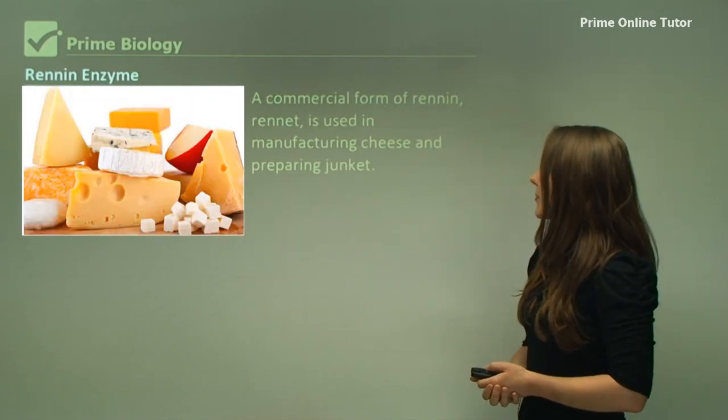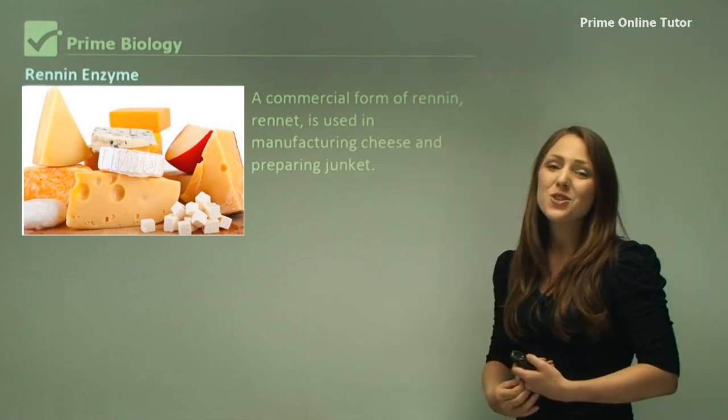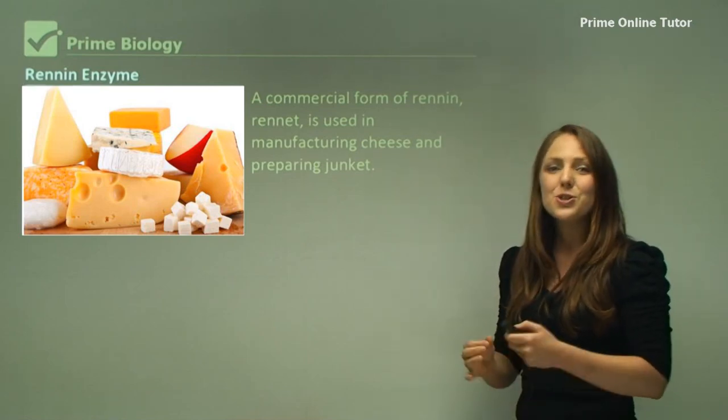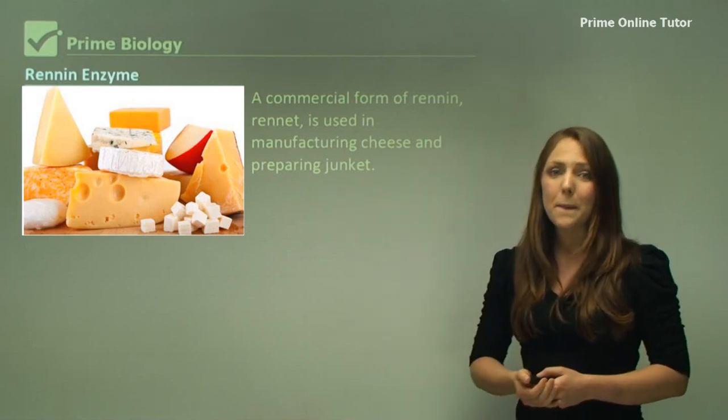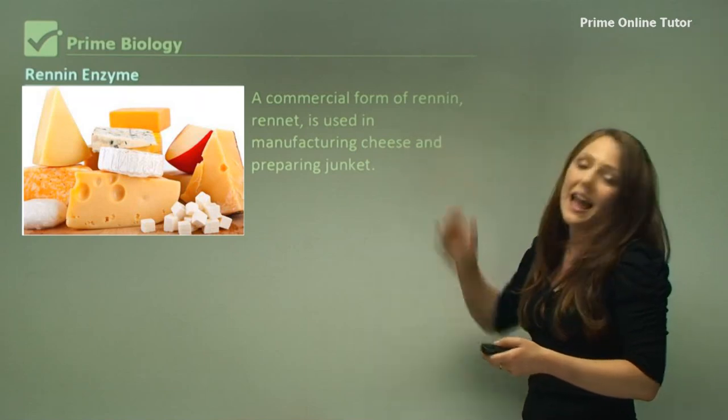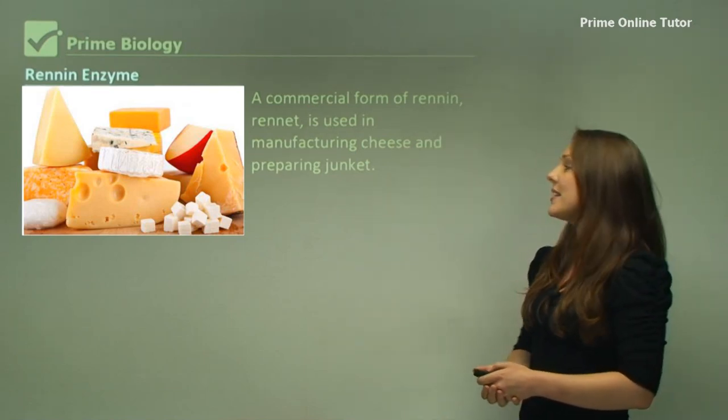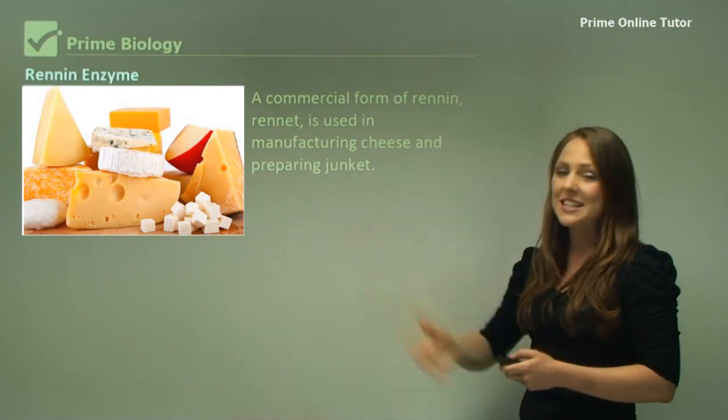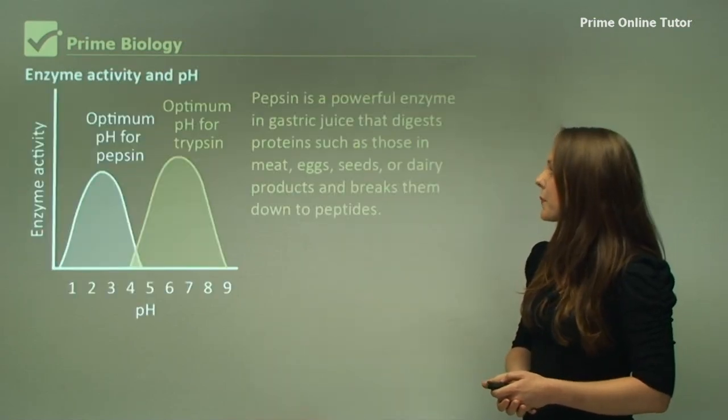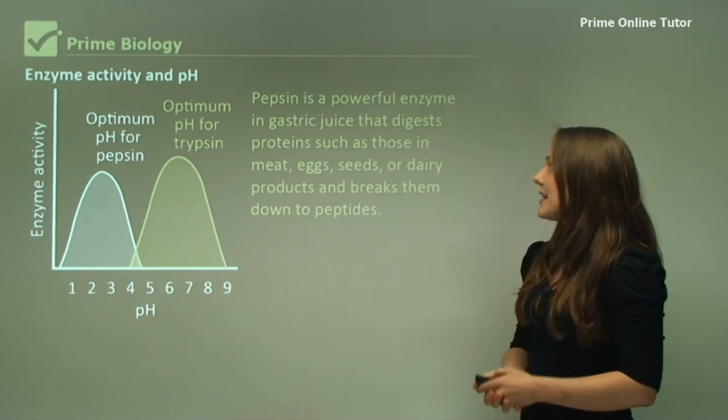A commercial form of rennin is called rennet. That is used in manufacturing cheese. So cheese is actually curdled milk. When you get milk as a liquid, you can add rennet, an enzyme, and it curdles milk to form a solid and we can make cheese in the process. Pepsin is a very powerful enzyme and it digests proteins in the stomach.